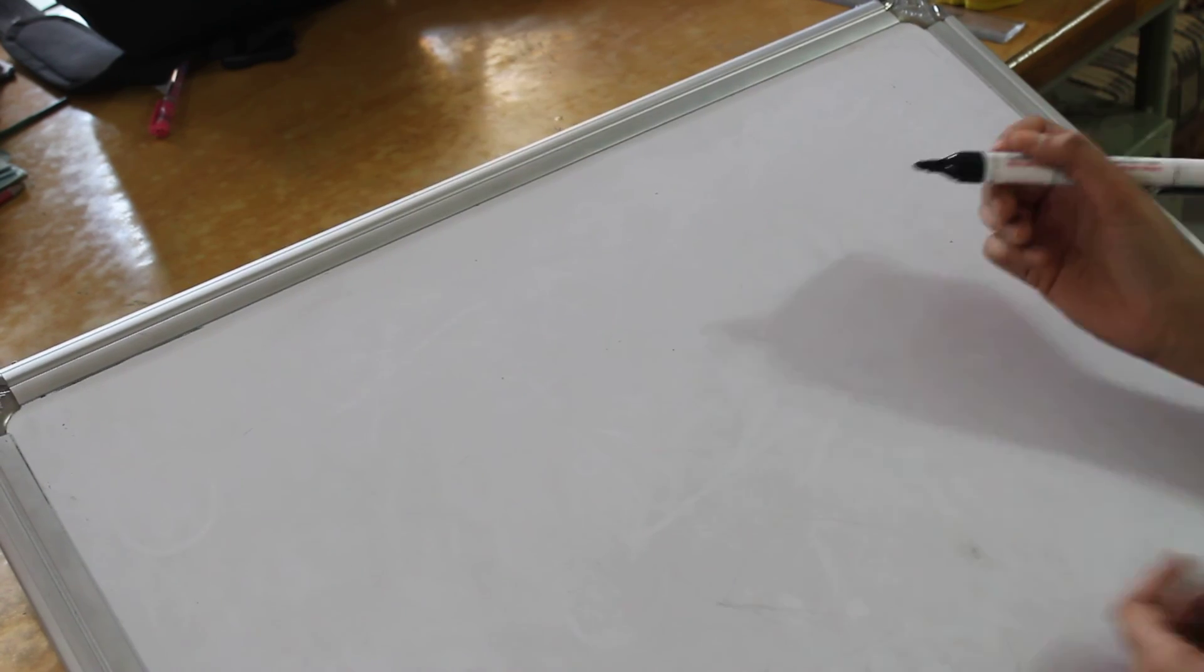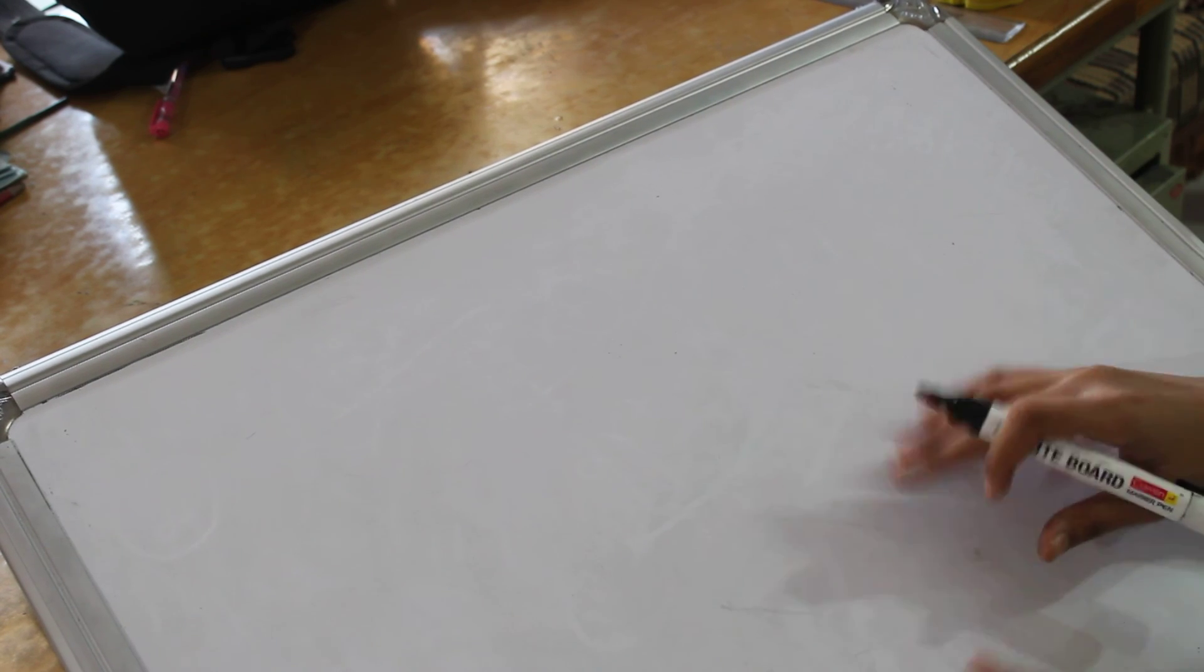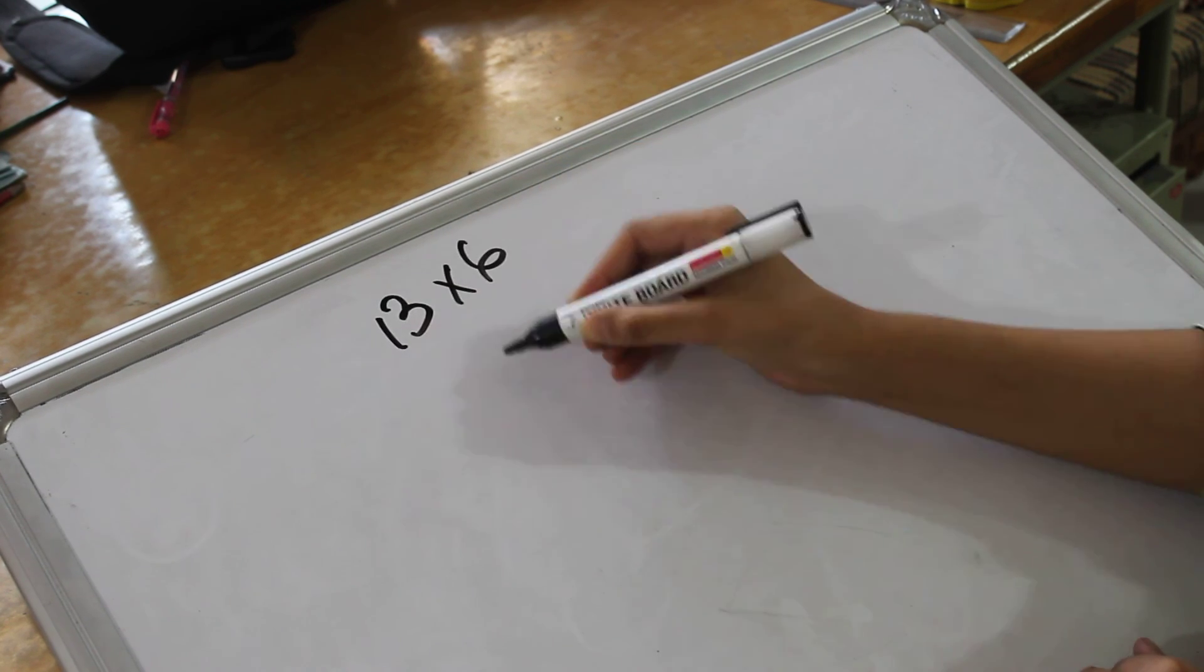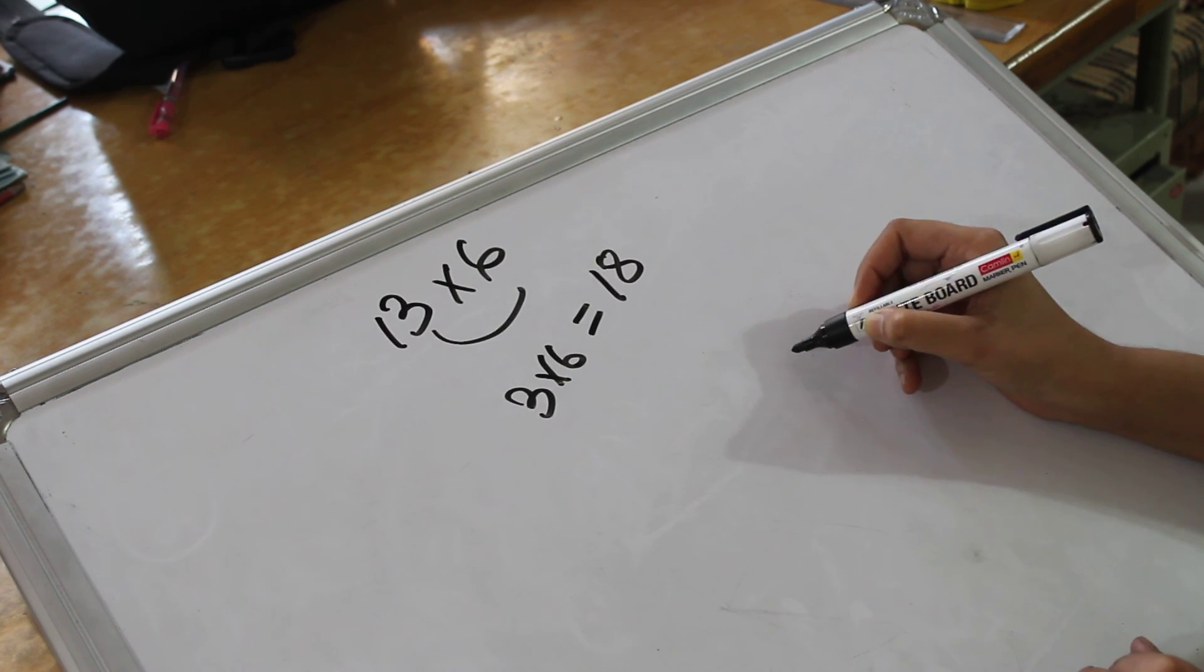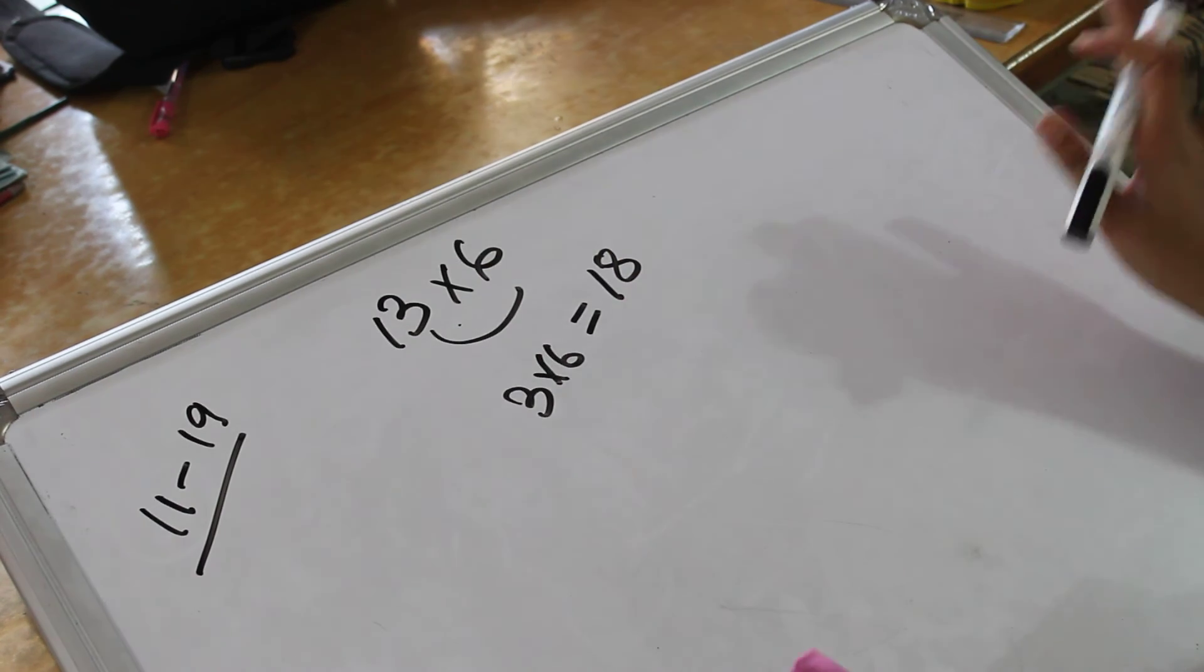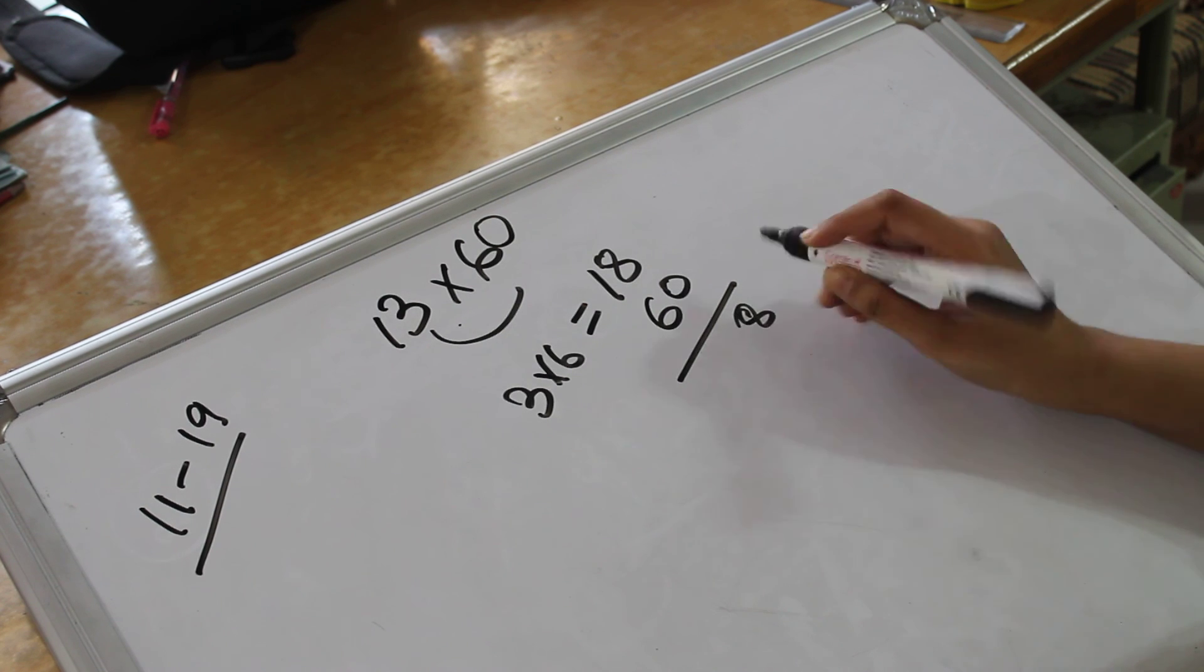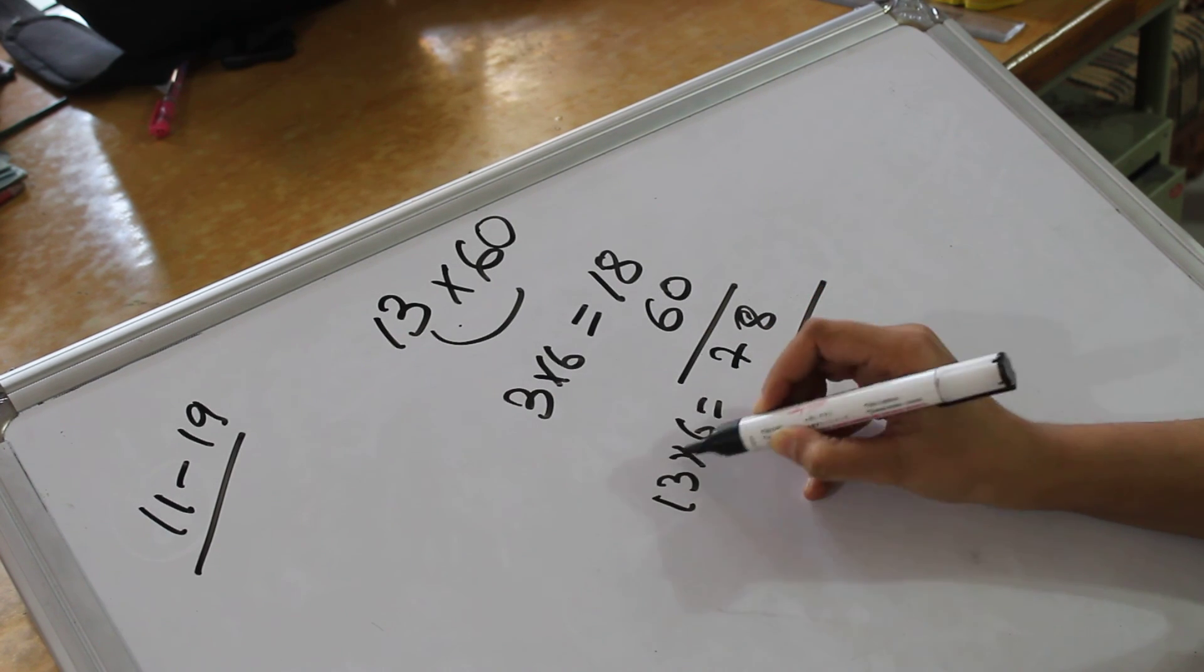Now, moving on to 13 table. You can use the same thing for all the rest of the numbers. Just remember 2 table and the same thing that I told you before. Now 13 table. 13 into 6. What is 3 into 6? 3 into 6 is 18. That same difference there, 10. So from tables 11 to 19, the difference is 10. Just add a 0 before it. 60 and 80. That would be 78. So 13 into 6 is 78.